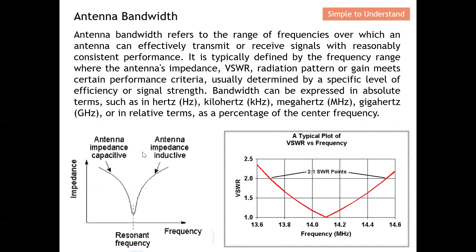What is actually antenna bandwidth? Antenna bandwidth refers to the range of frequency over which an antenna can effectively transmit or receive signal with reasonably consistent performance. In short, bandwidth quantifies what frequency range the transmitter or receiver can work. Therefore, this bandwidth plays an essential role.